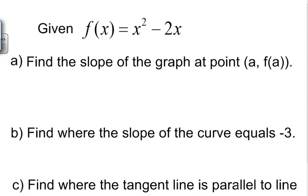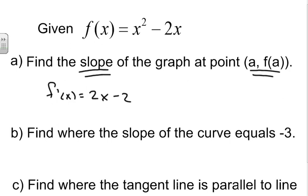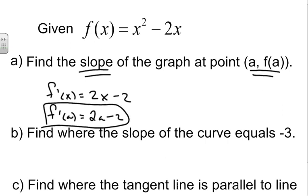The final example: f(x) equals x squared minus 2x. We want to find the slope of the graph, which means finding the derivative. f'(x) equals 2x minus 2. For part a, we find the slope at the point (a, f(a)), so we plug in a: f'(a) equals 2a minus 2. That's our slope on the graph at point a.